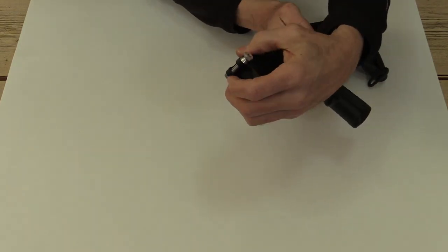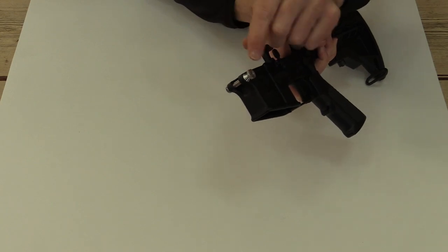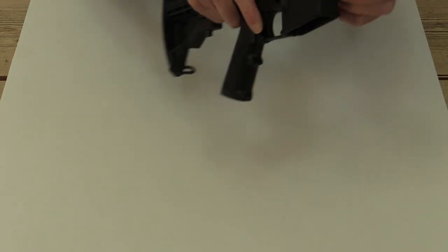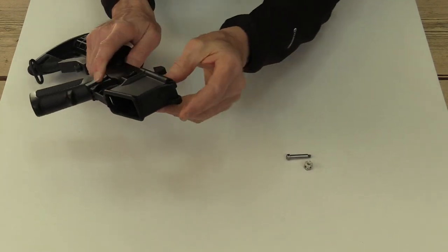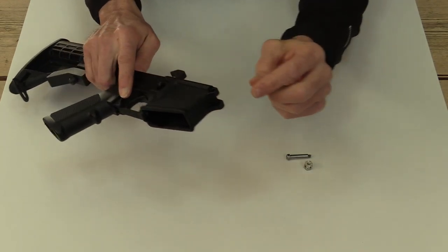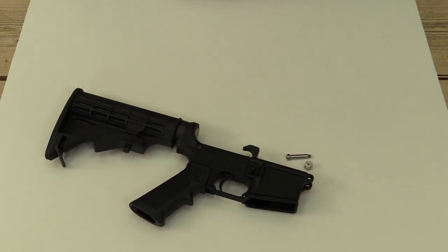Normally used for the pivot pin retaining detent and spring. You can choose to use either method or both methods to secure the two receivers together, depending on your concerns about meeting the local standard of permanently joining the two receivers.